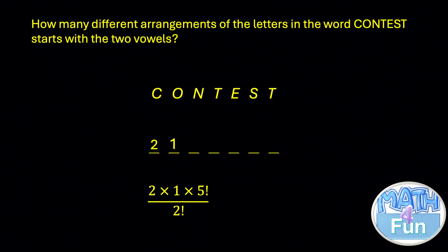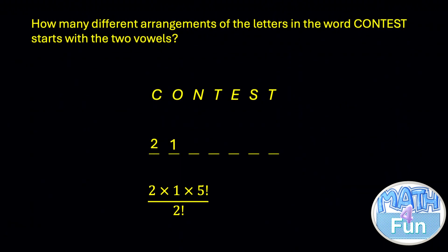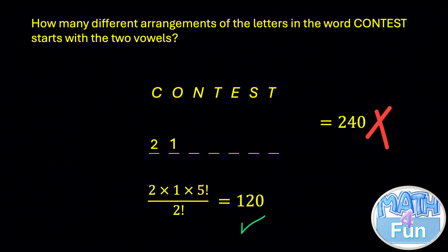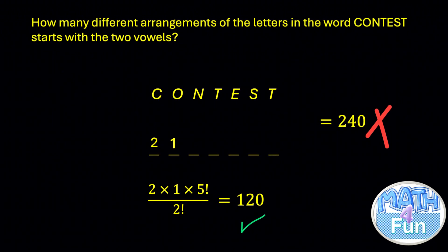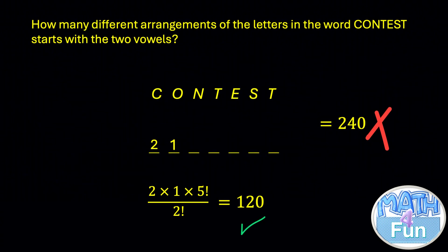So in our case here, the answer is going to be 2 times 1 times 5 factorial over 2 factorial, and you can do it by calculator and you get 240. Therefore, there are 240 different arrangements of the letters of the word CONTEST that start with the two vowels.